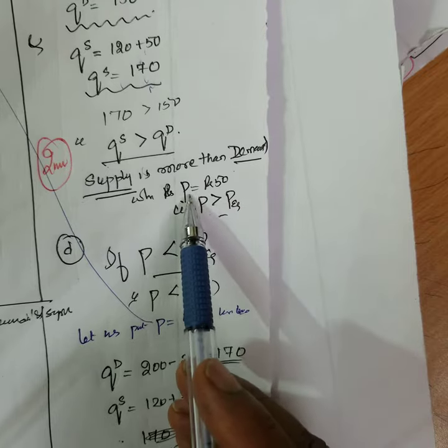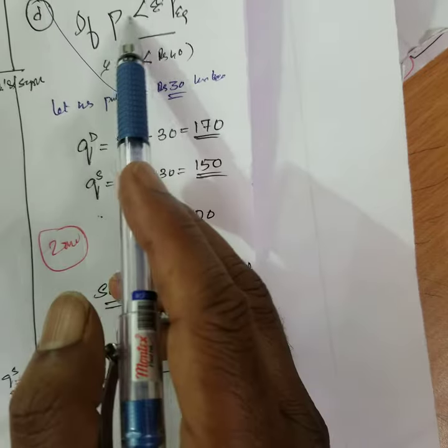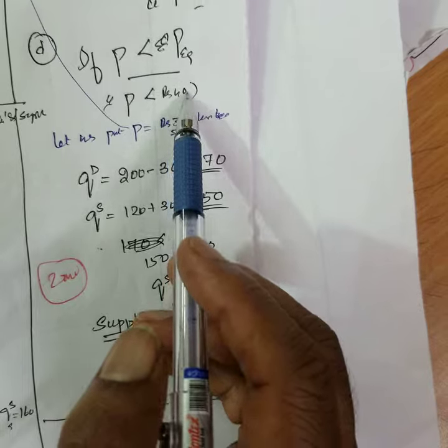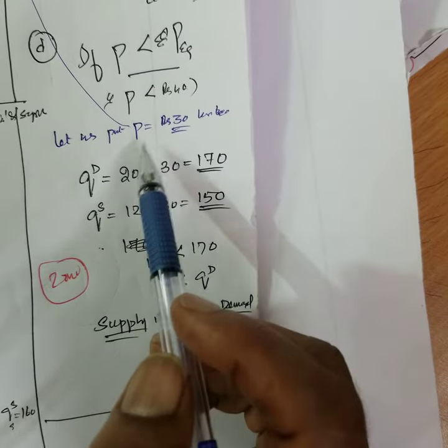If you increase the price to 40 to 50, here also, if price is reduced, instead of 40 rupees you sell it for 30 rupees, that means what will happen.